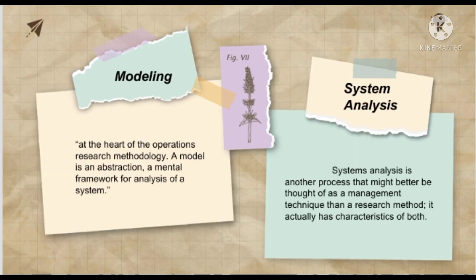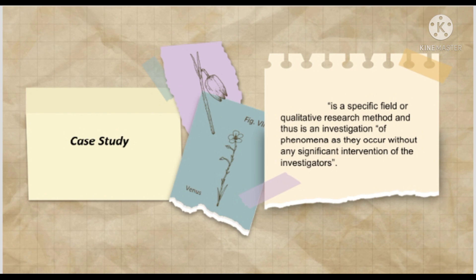At the heart of operations research methodology, a model is an abstraction — a mental framework for analysis of a system. System analysis is another process that might better be thought of as a management technique than a research method, though it does have characteristics of one. Field or qualitative research is an investigation of phenomena as they occur without any significant intervention by the investigators.